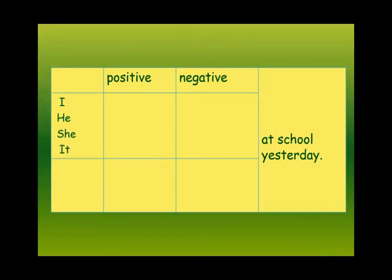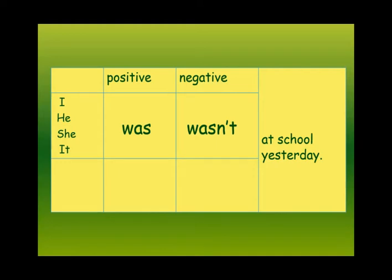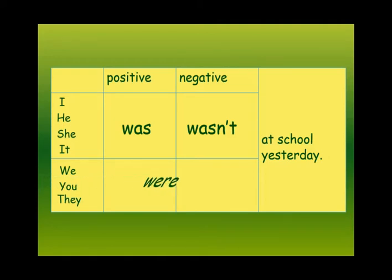I, he, she, it — take 'was'. In negative form they take 'wasn't'. We, you, they — take 'were'. In negative form they take 'weren't'.